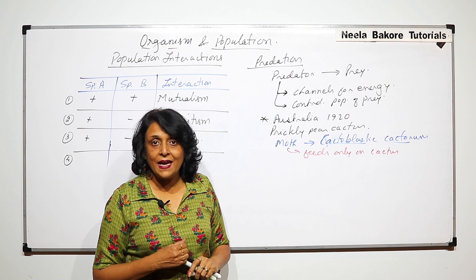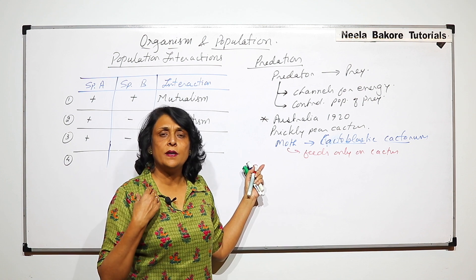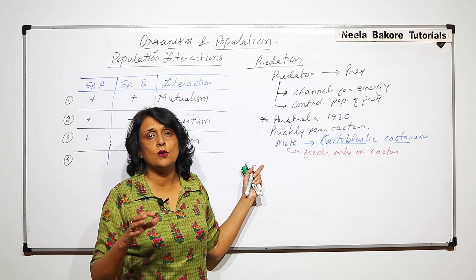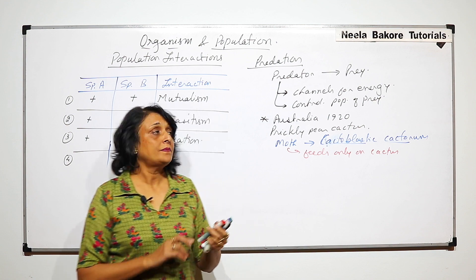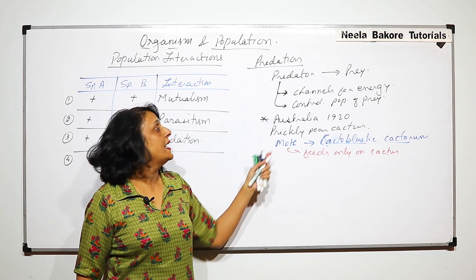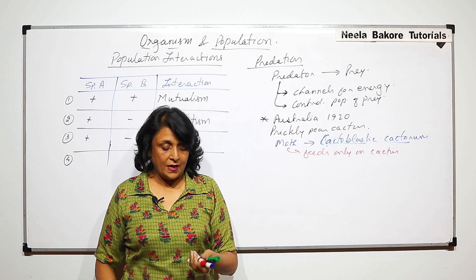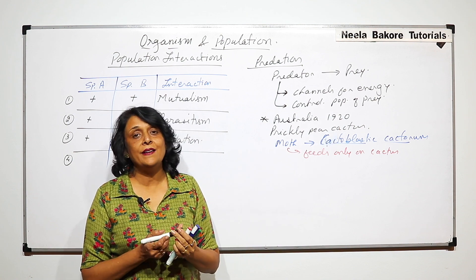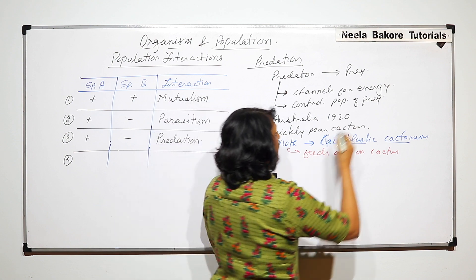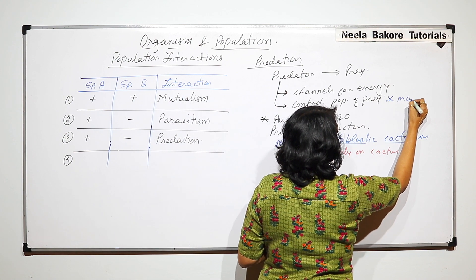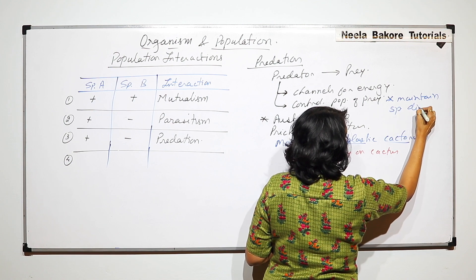Again, the reason is the same: exotic species coming in, not having a natural predator, and that is why its number grows in an uncontrolled manner. Same thing happened with this cactus. When we say that predators help in keeping the population under check, an extension of this is that they also maintain species diversity.